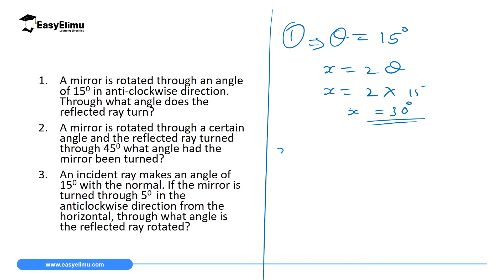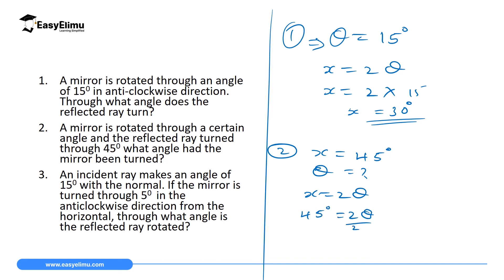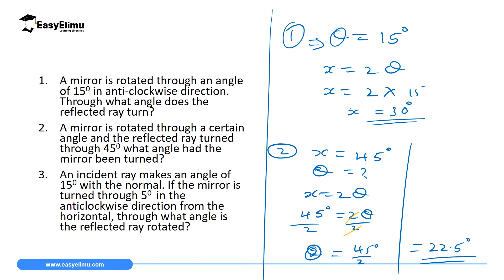The second question reads: a mirror is rotated through a certain angle and the reflected ray rotates at an angle of 45 degrees — what angle had the mirror rotated? We use the formula x equals 2-theta, so 45 equals 2-theta. Dividing both sides by 2, theta equals 45 divided by 2, which gives 22.5 degrees. So the mirror was rotated at an angle of 22.5 degrees. Now attempt the third question as your assignment.